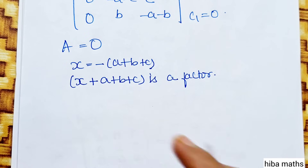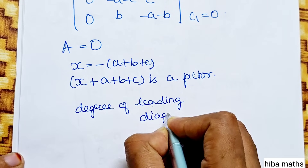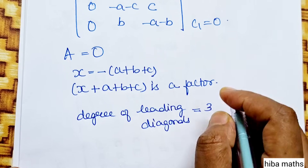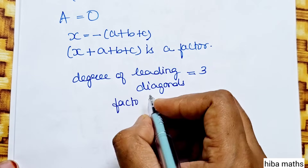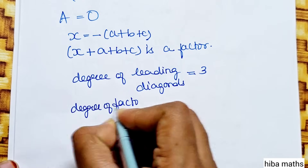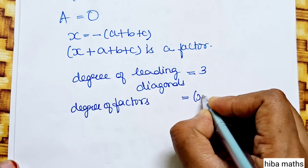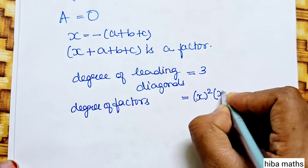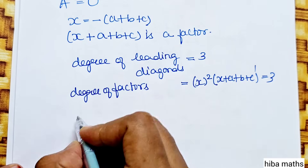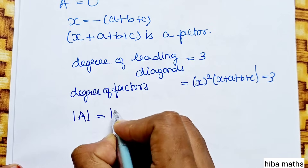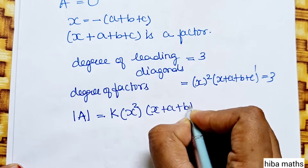After applying C1 plus C2 plus C3, the first column is entirely zero. The remaining entries give a value of a minus c equal to minus of a plus b plus c. Therefore x plus a plus b plus c is a factor, and the full factorization is x squared times x plus a plus b plus c.